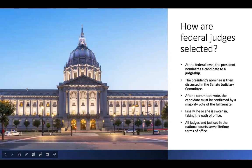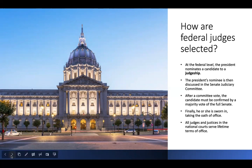So how does someone become a federal judge? At the federal level, the president nominates a candidate to the judgeship. The president's nominee is then sent to Congress for confirmation — specifically the Senate Judiciary Committee. After a committee vote, the candidate must be confirmed by a majority vote of the full Senate. Finally, he or she is sworn in taking the oath of office. All judges and justices at the federal level have lifetime terms.